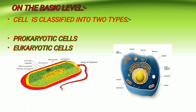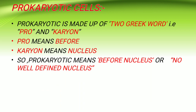Let us first deal with the prokaryotic cells. What is the meaning of prokaryotic? Prokaryotic is made up of two Greek words: pro and karyon. Pro means before and karyon means nucleus.